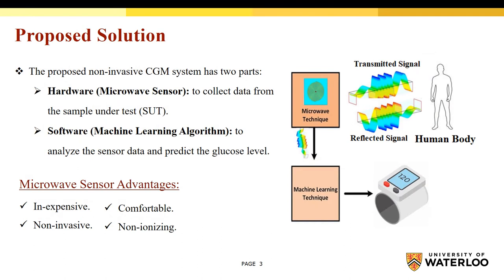Our proposed non-invasive continuous glucose monitoring system has two parts: the hardware, which is the microwave sensor to collect the data, and the software, which is the machine learning algorithm to analyze and predict the glucose level. As we can see from this figure, the sensor will send the signal to the human body, and the reflected signal will contain the signature of the glucose based on the dielectric parameter interaction. Then, this signal will be sent to the machine learning algorithm to analyze and predict the actual glucose level.